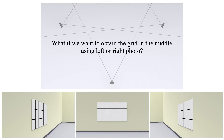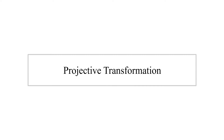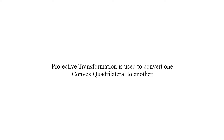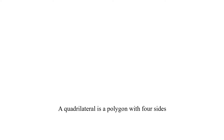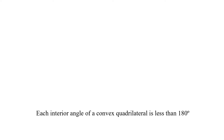What if we want to obtain the grid in the middle using the left or right photo? In that case, we need to use projective transformation. Projective transformation is used to convert one convex quadrilateral to another. A quadrilateral is a polygon with 4 sides.